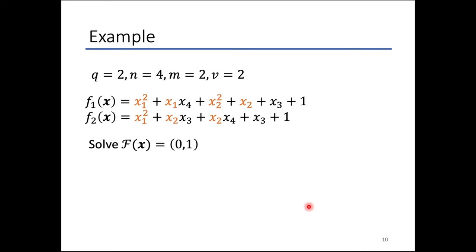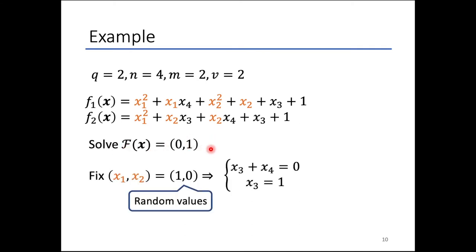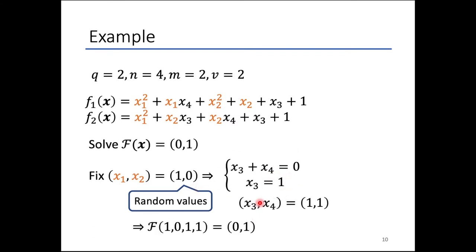This is an example of the central map F of UOV, where the order of the finite field Q is 2 and the number of variables N is 4. These two polynomials do not involve quadratic terms of x3 and x4. So when we solve this equation, we randomly fix x1, x2 to 1, 0. Then the polynomial becomes a linear system and x3 and x4 are easily found to be 1, 1. As a result, a solution of this system is (1, 0, 1, 1).